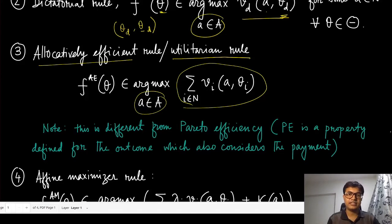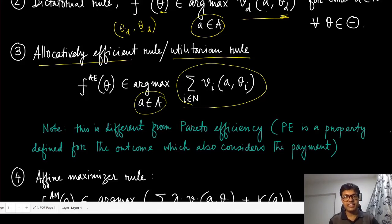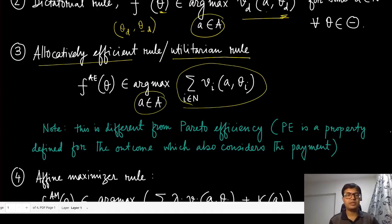There could be cases where some people get less valuation than others, but allocative efficiency simply maximizes the sum of valuations.